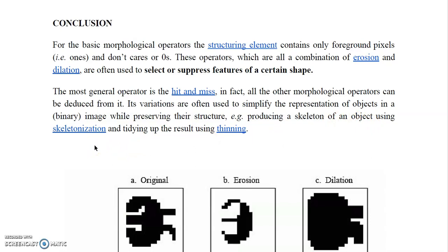These operators help a lot in morphological image processing. Their variations are often used to simplify the representation of an object while preserving its structure — for example, producing the skeleton of an object through skeletonization, or tidying up results during thinning. If some pixel values go wrong during representation, MIP can repair and improve them.